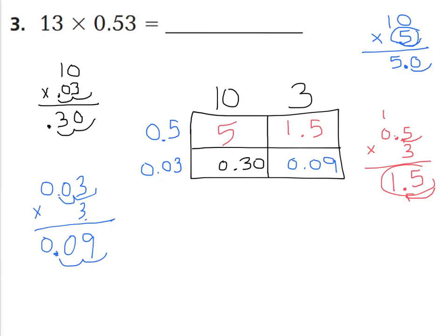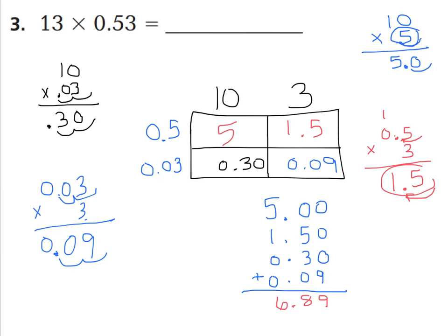So now we add up all of our partial products. Starting with 5 wholes, then 1 and a half, put your decimal point down, add 30 hundredths, then 9 hundredths. Make sure you keep all your place values lined up — a good way is to make them all have a value in the ones, tens, and hundredths places. We have 9 hundredths, 8 tenths, and 6 wholes. Our product should be 6 and 89 hundredths.